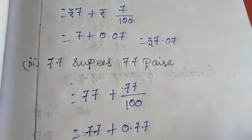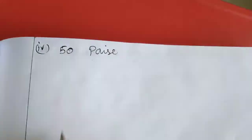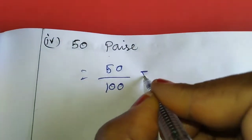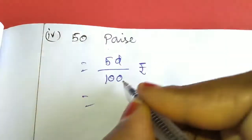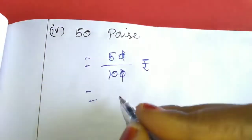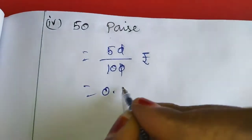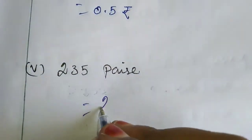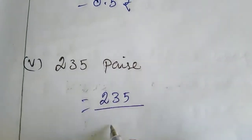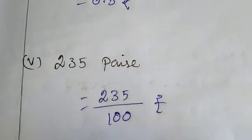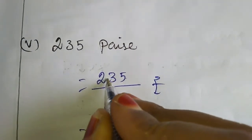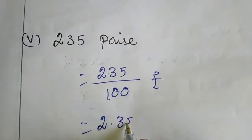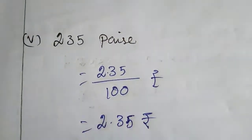Now 50 paise: we write 50/100 rupees. The zeros cancel, so this we write as 0.5 rupee. Next, 235 paise: 235 divided by 100 rupees. Two digits before the dot means the answer is 2.35 rupees.